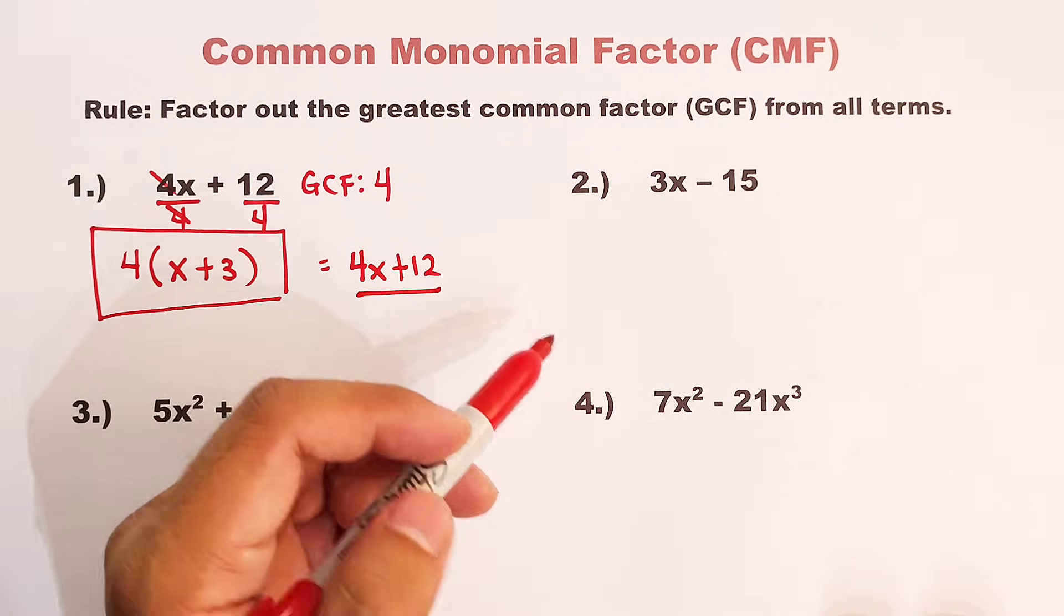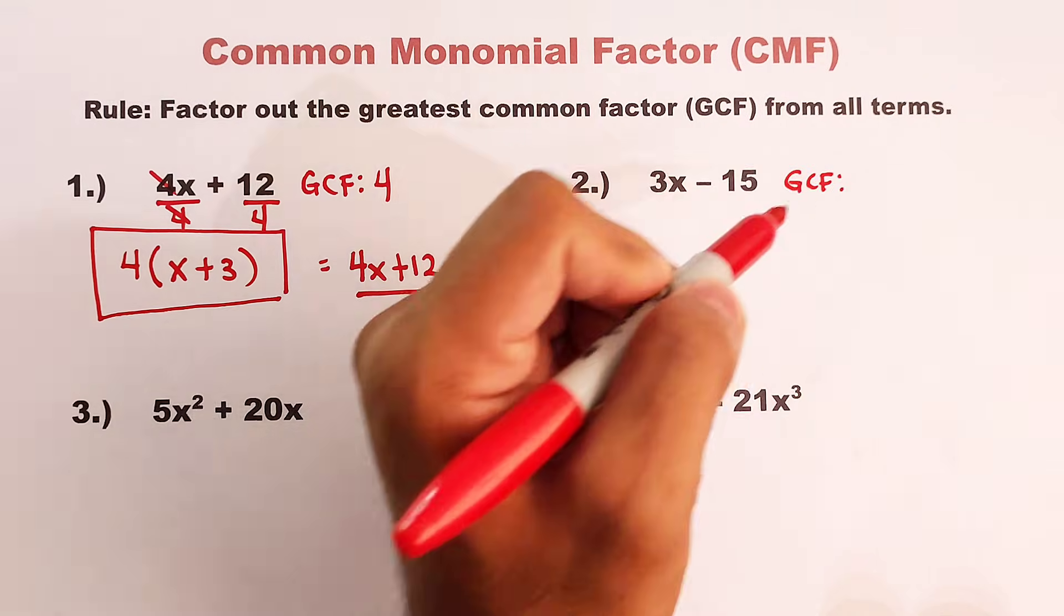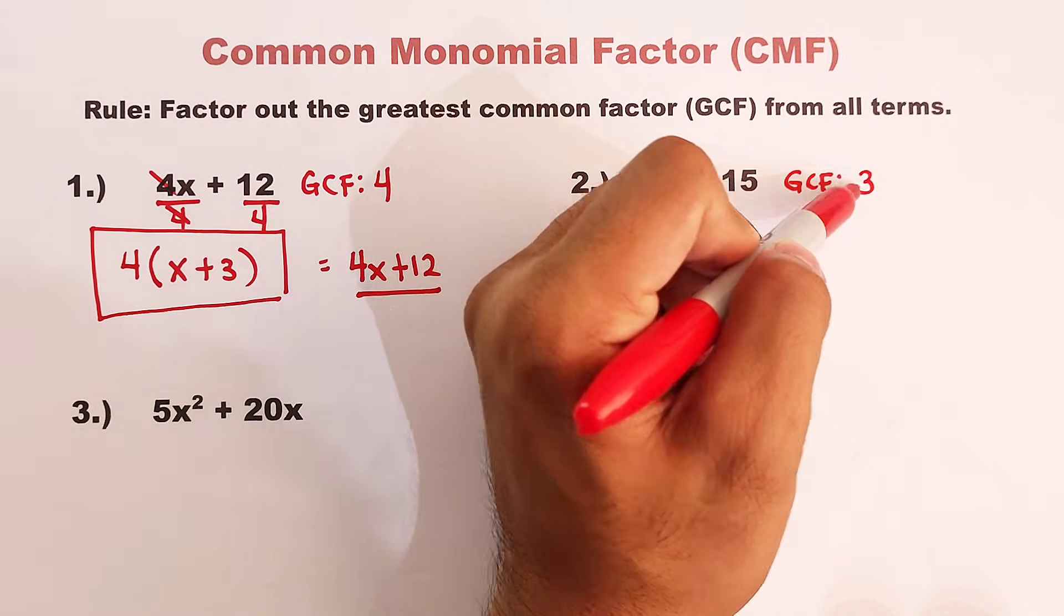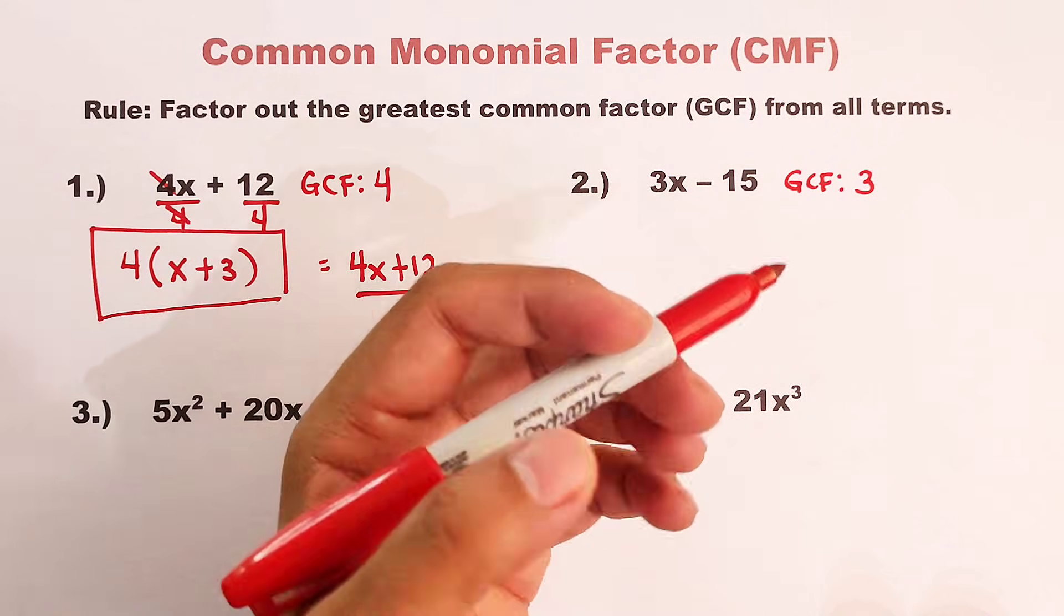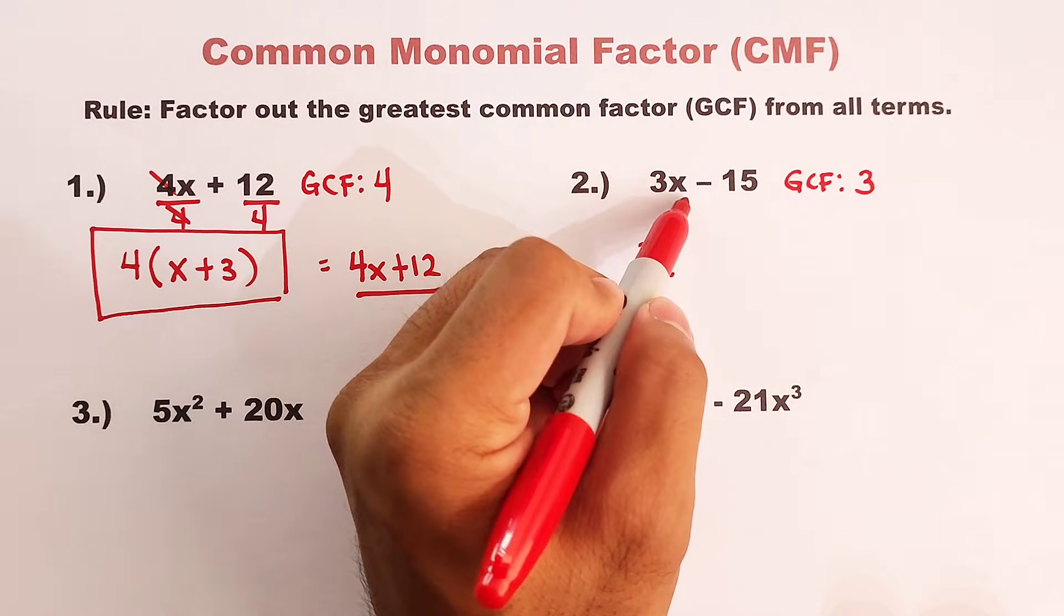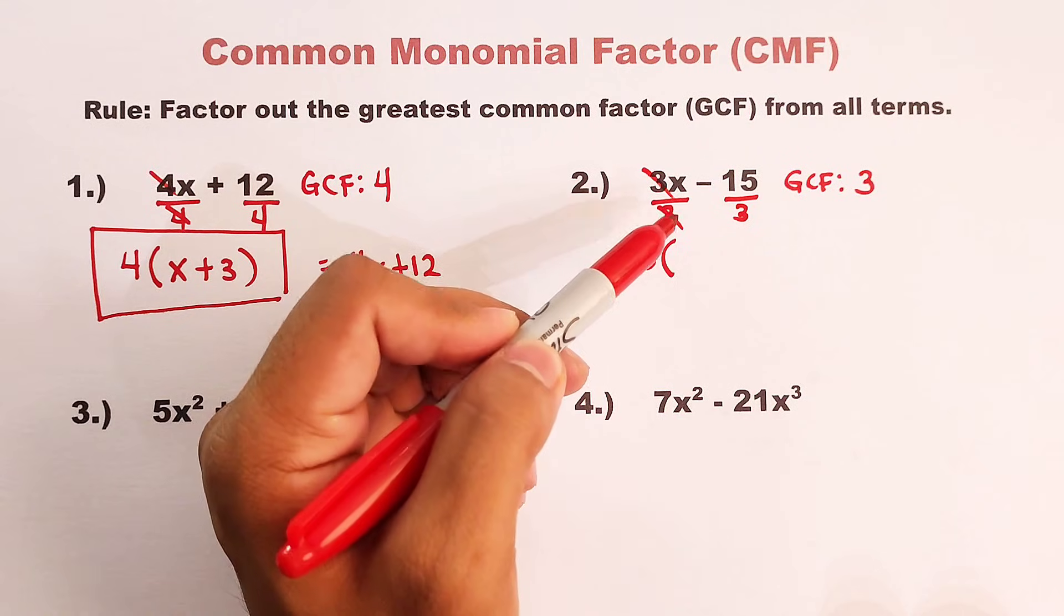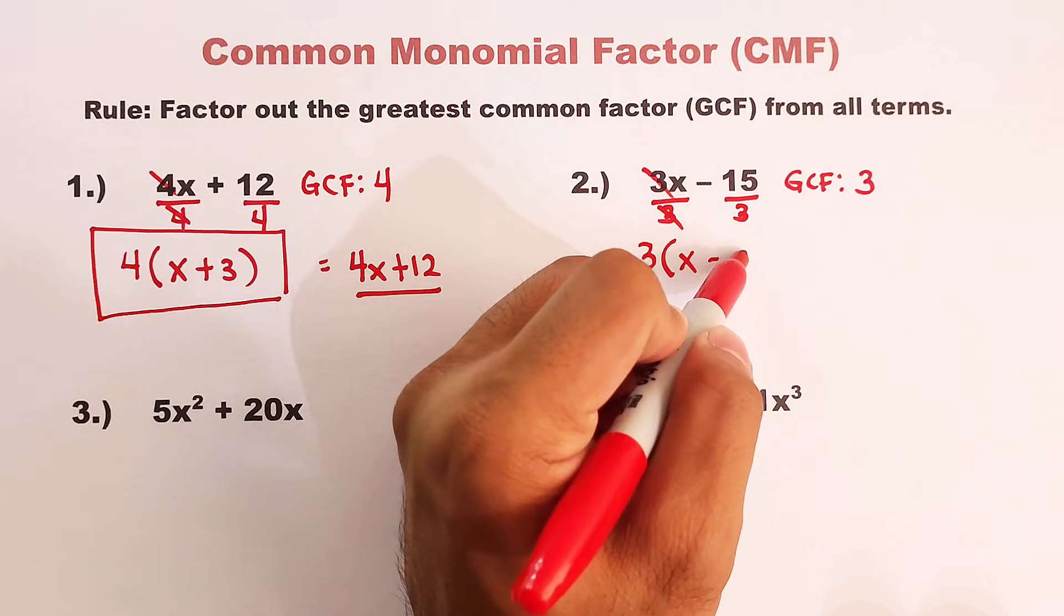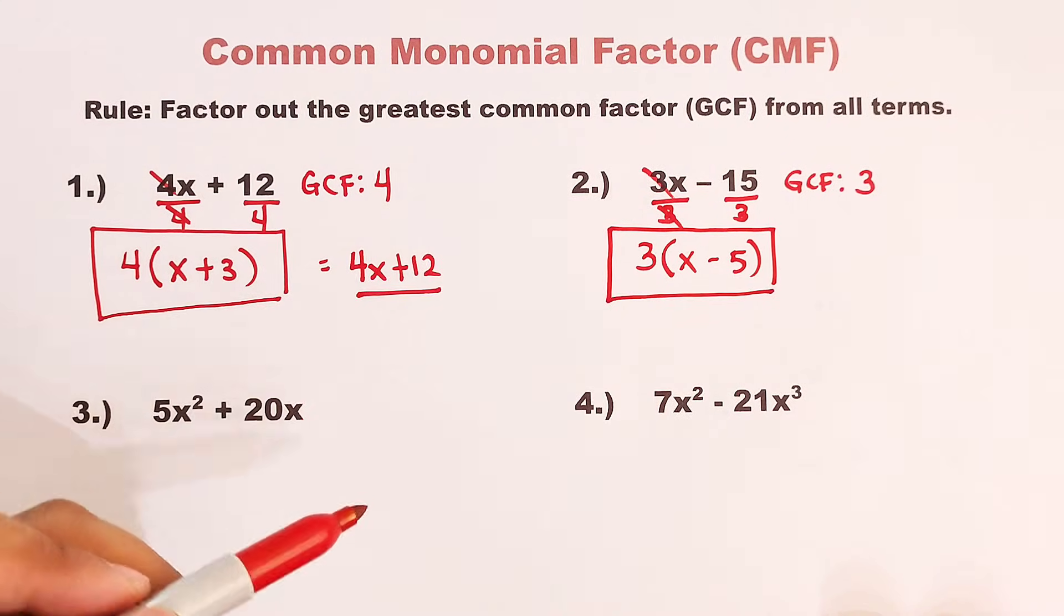Now, let's proceed with example number 2. We are given 3x minus 15. So what is the GCF of these two terms? Okay, very good. The GCF is simply 3 since the variable is not existing in both terms. Now, this is our first factor. Divide the whole or the two terms by 3. Cancel this out and you have your x and then 15 or negative 15 divided by 3. That would be minus 5. And these are the factors of the second example.